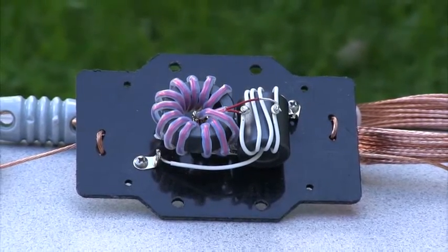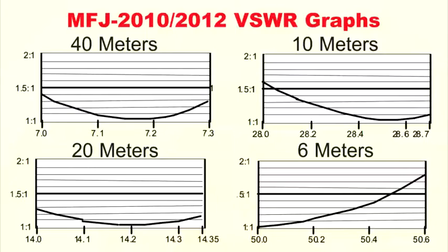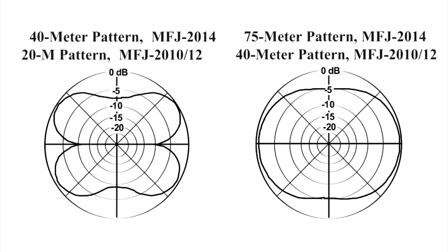Element feed points are compensated for typical mounting height, so you always get the lowest possible SWR on all bands. There's real gain, too.